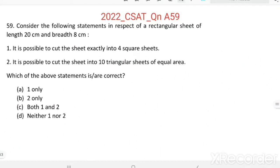Question 59. Consider the following statements in respect of a rectangular sheet of length 20cm and breadth 8cm. Statement 1: It is possible to cut the sheet exactly into 4 square sheets. Statement 2: It is possible to cut the sheet into 10 triangular sheets of equal area. Which of the above statements is or are correct?